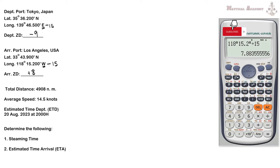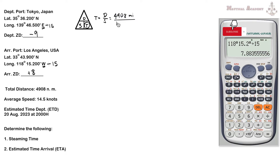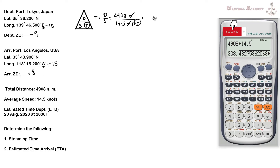To find the steaming time, we use the magic triangle: Time = Distance ÷ Speed. Our total distance is 4,908 nautical miles, and our average speed is 14.5 knots. Dividing 4,908 by 14.5 gives us 338.48 hours.